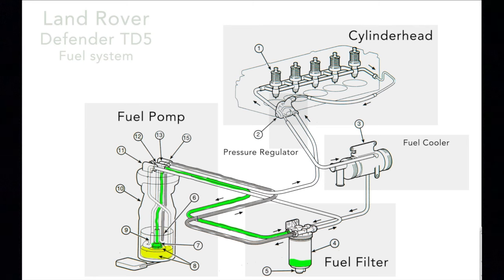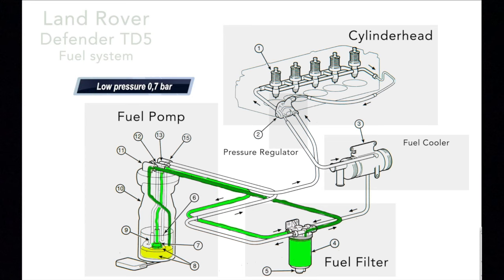Once the fuel filter is filled up with fuel, fuel is returned back towards the fuel pump. That fuel is still at a low pressure at 0.7 bar and is the feed for the high pressure pump. The dark green identifies the return towards the fuel pump.